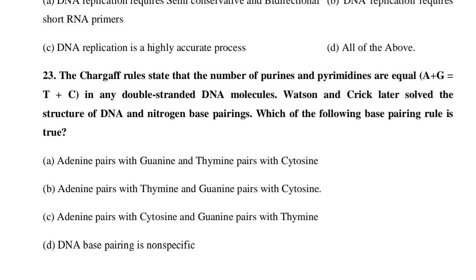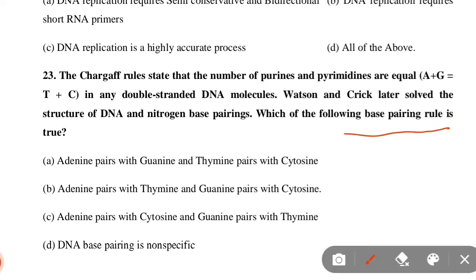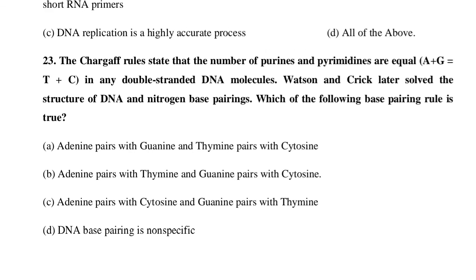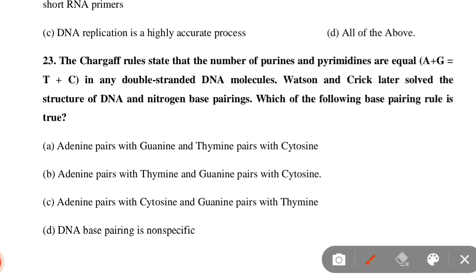Next MCQ: Chargaff's rule states that the number of purines and pyrimidines are equal in any double-stranded DNA molecule. Watson and Crick later solved the structure of DNA and nitrogen base pairing. Which of the following base pairing rules is true? Option A: Adenine pairs with guanine and thymine pairs with cytosine. Option B: Adenine pairs with thymine and guanine pairs with cytosine. Option C: Adenine and guanine pair with thymine. Option D: DNA base pairing is non-specific. Option B is correct.